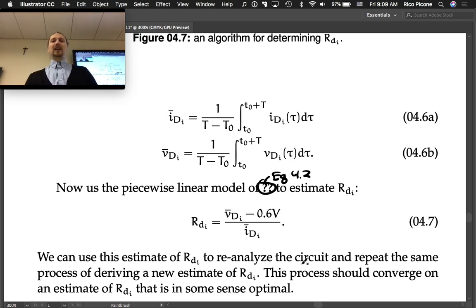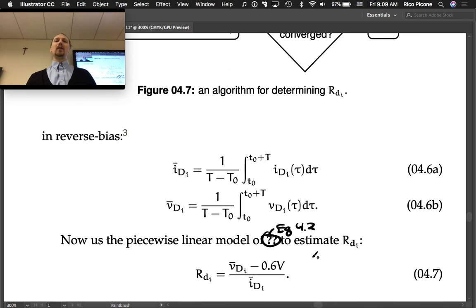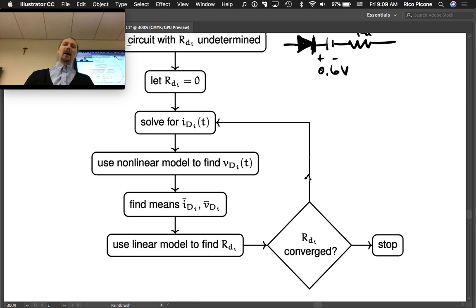Then you can reanalyze. If you have this value of Rd, you can go back and use that. Instead of Rd equals zero, which you had last time, you can use Rd equal to whatever you got as a result of your analysis. And then do this again, iterate on it. Go through again, you're going to get better values of current, better values of voltage, and you're going to get a better R.